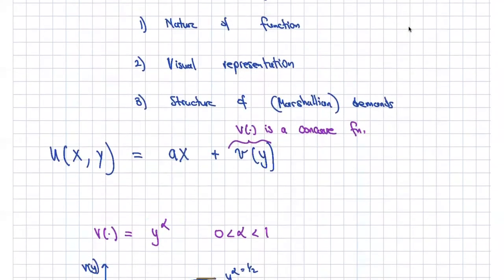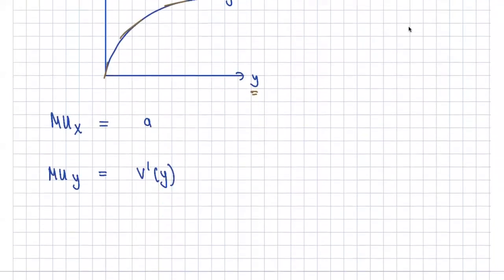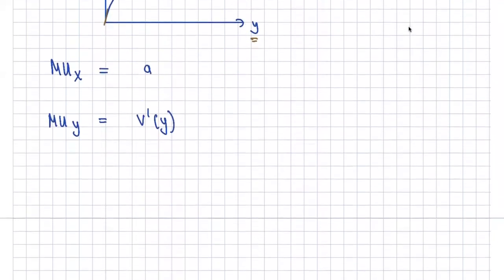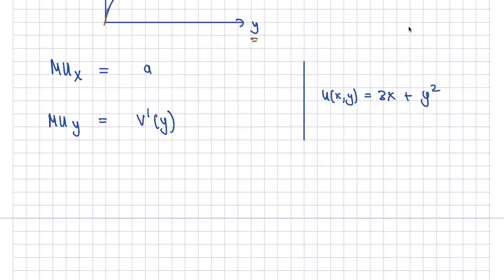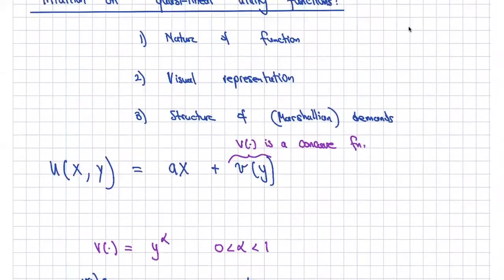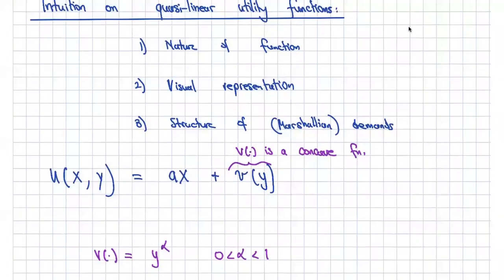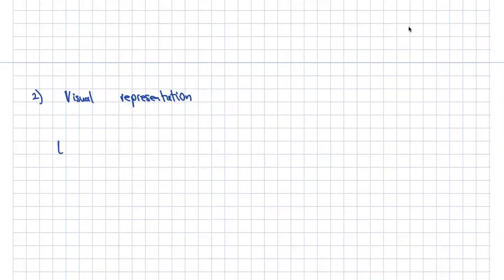Now that we know the nature of the function, I can give you a visual to get a sense of the optimal solution. Just a quick comprehension check: is 3x + y² a quasi-linear utility function? The answer is no — y² is not a concave function, it's a convex function. Now let's move to the visual presentation. I'm not going to solve any Lagrangians — I just want to build intuition.